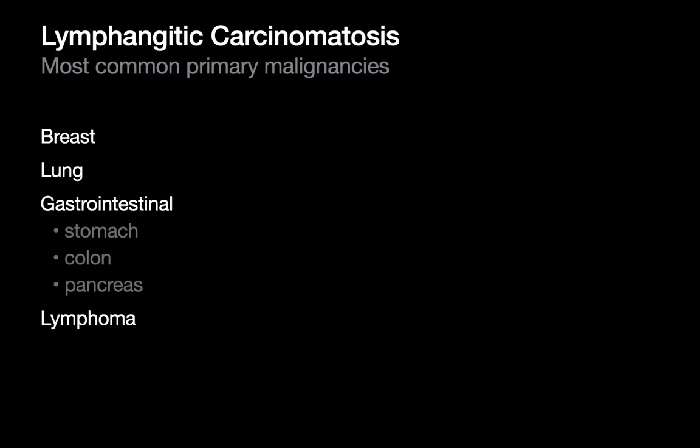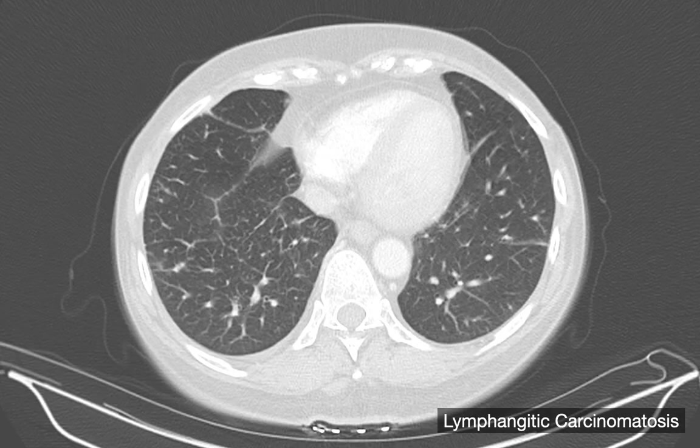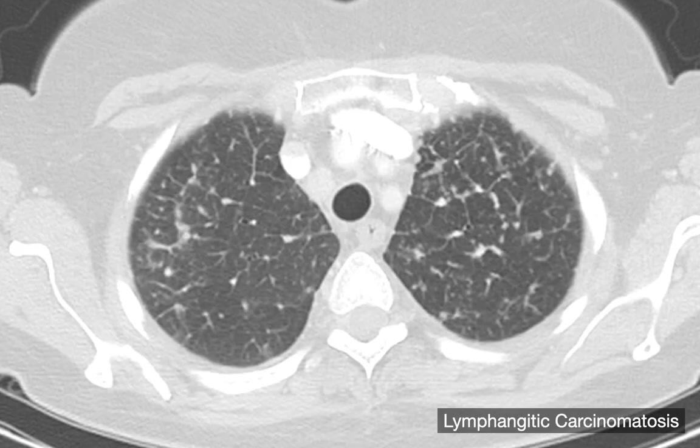Lymphangitic carcinomatosis is another cause of septal interstitial pattern. The most common malignancies associated include breast, lung, GI cancers and lymphoma. It's more often asymmetric — at least half the time — which helps nudge toward lymphangitic carcinomatosis versus interstitial edema. It can also coexist with a nodular interstitial pattern in a bronchovascular or perilymphatic distribution. If you see that combination with the septal interstitial pattern, you can be much more confident this is lymphangitic carcinomatosis rather than pulmonary edema.